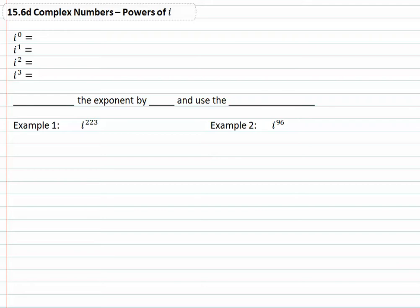15.6D complex numbers, powers of i. i to the zero is going to be one, because anything raised to the zero power is one. Recall that if we had 64 to the zero power, it equals one. If we had x to the zero power, it equals one. Anything raised to the zero power is going to be one. So the first answer should make sense in that case.